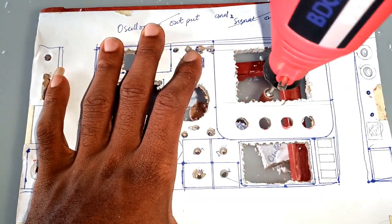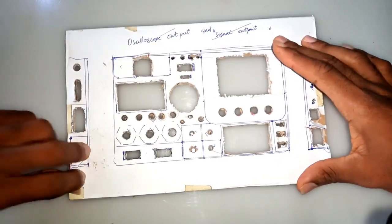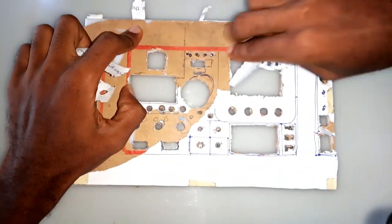Using the sand knob, I smoothened the base surfaces. After completing this, I removed the paper stuck to the plastic material.